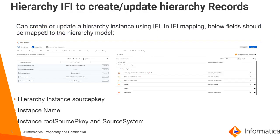In this presentation, we will see how we can create or update hierarchy records using file import. In order to do that, we would first need to create a hierarchy instance. To create a hierarchy instance, we would need the hierarchy instance source primary key, the hierarchy instance name, and also the root source primary key and root source system.